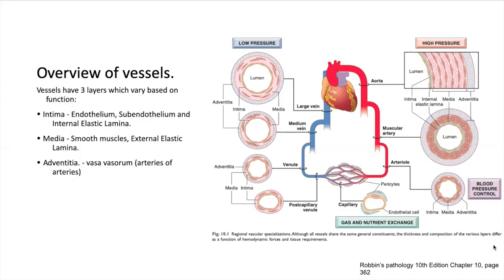These layers vary depending on the function of the vessel. Large vessels are elastic in order to withstand high pressure and propel blood, whereas capillaries have thin walls made of endothelial cells and pericytes to allow for exchange of gas and nutrients. Veins have thin walls and valves to maintain a low pressure circuit and to prevent backflow respectively. This fundamental difference in structure and function explains why some lesions or diseases affect specific vessels.